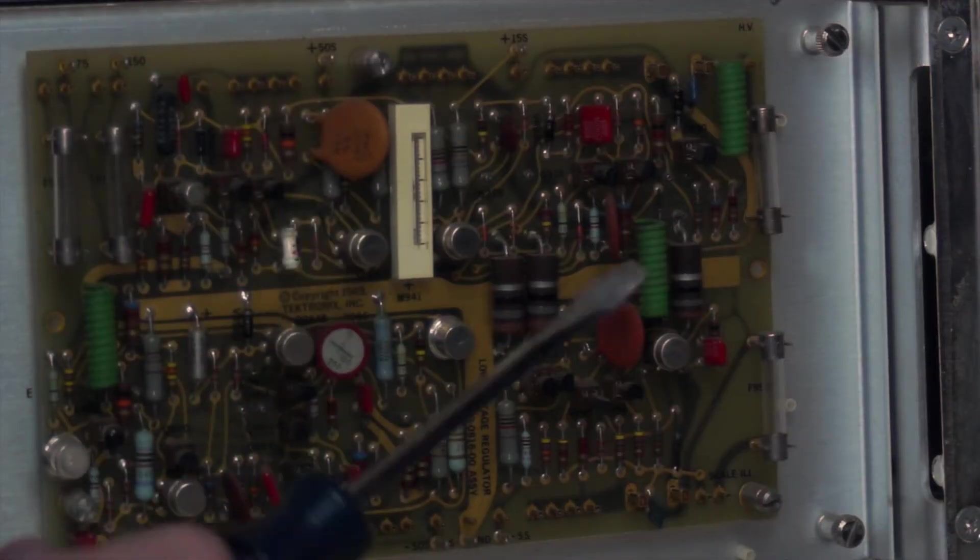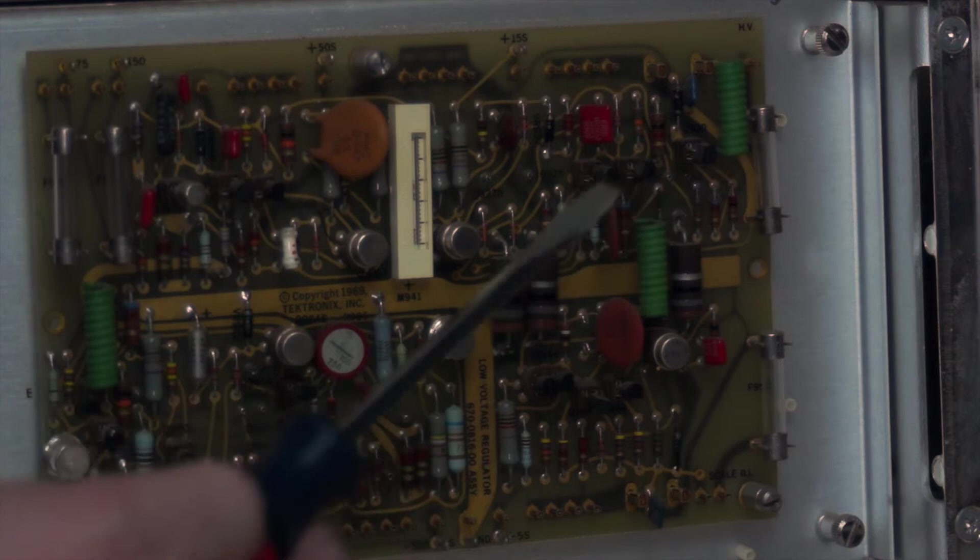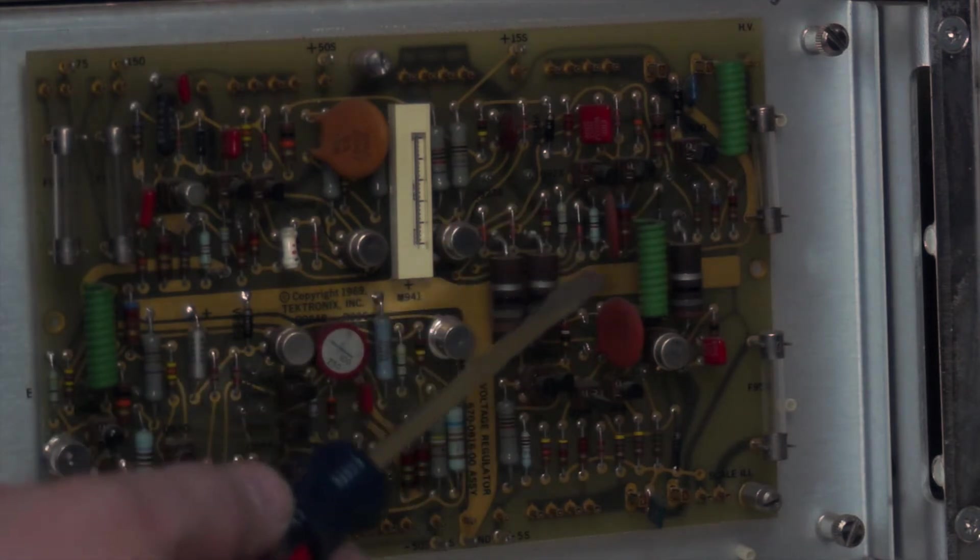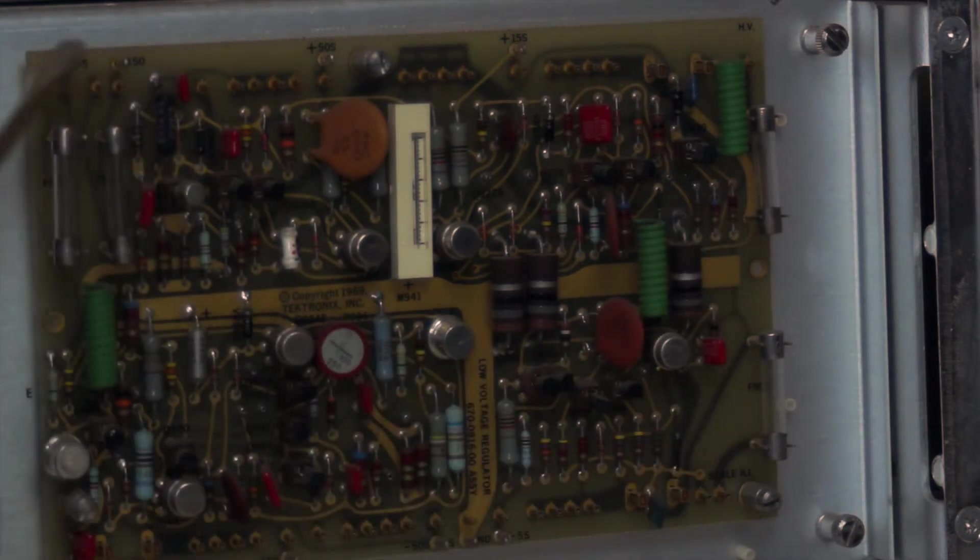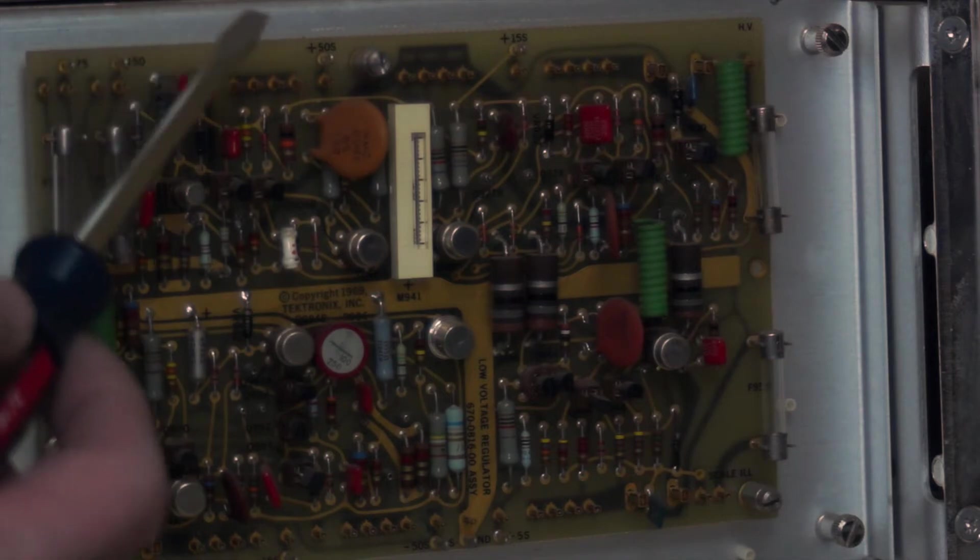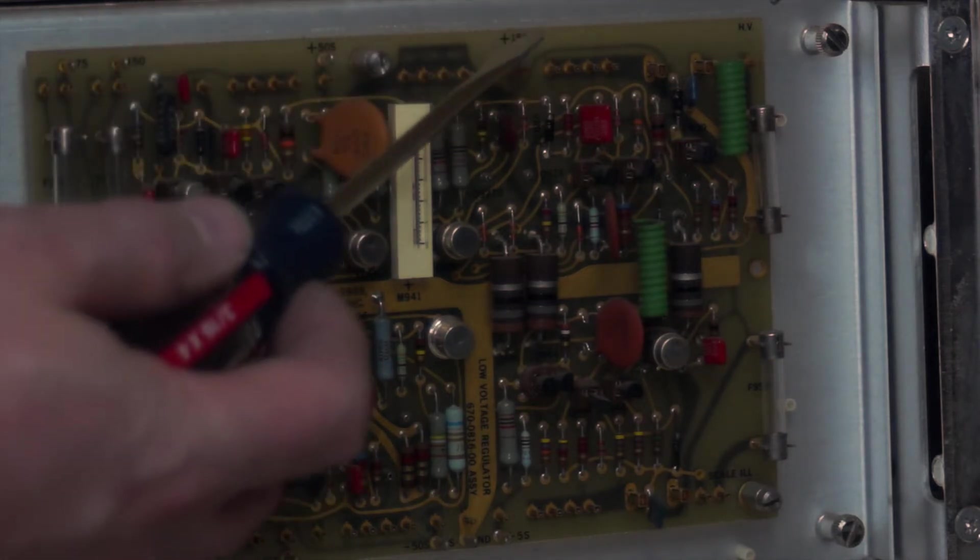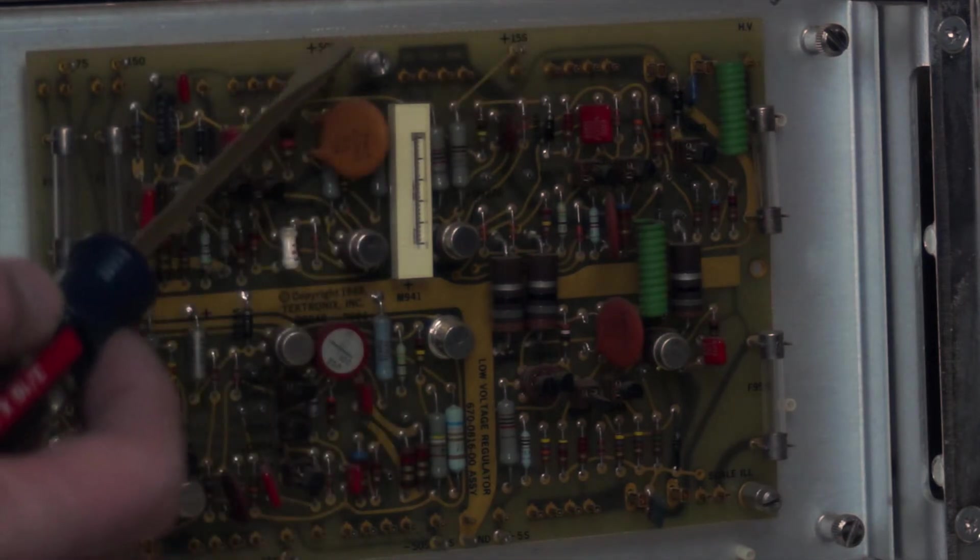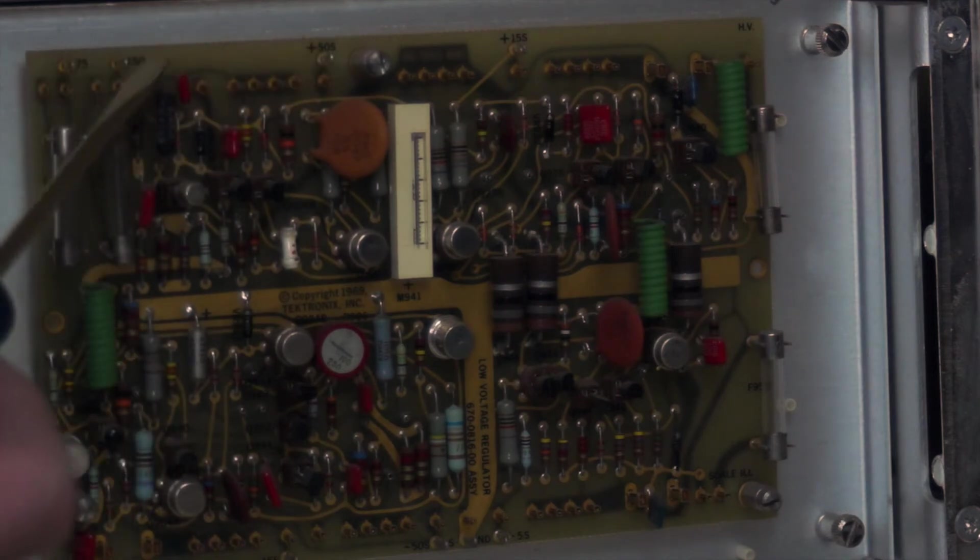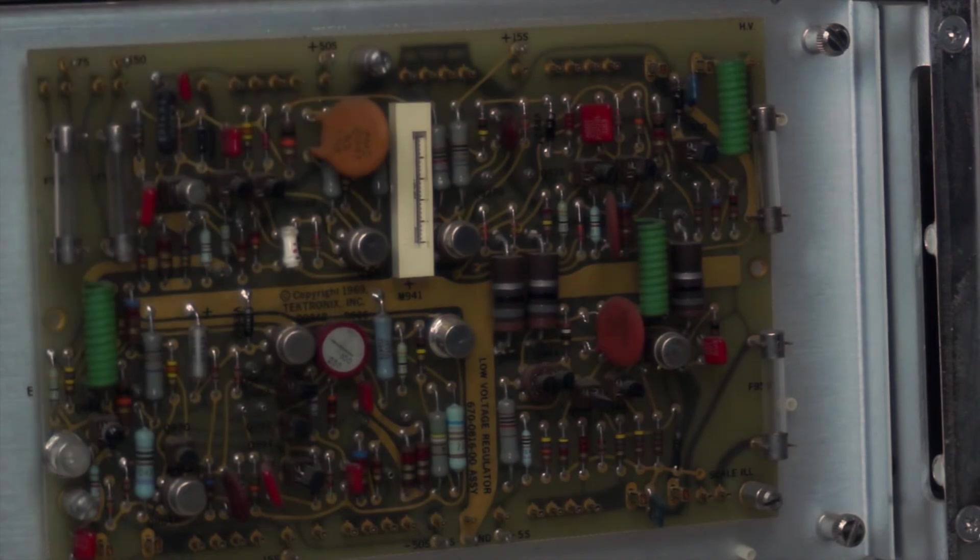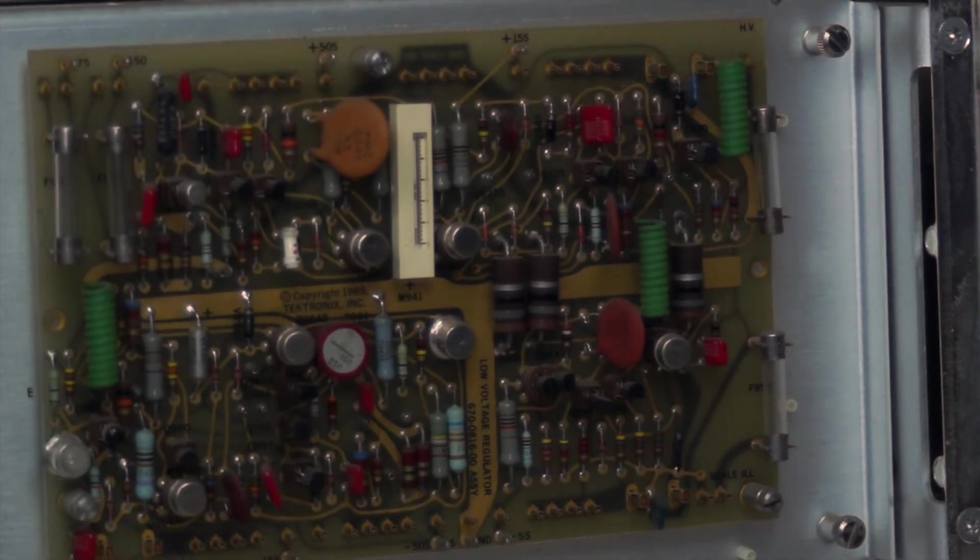This is the low voltage regulator board. We've got our transistors all socketed, some big resistors there, and four fuses on this regulator board. The board is a low voltage regulator which in 1969 was 15 volts, 50 volts, 75 volts, and 150 volts. In summary, low voltages on this equipment are really high compared to today's standards and they're also very dangerous.